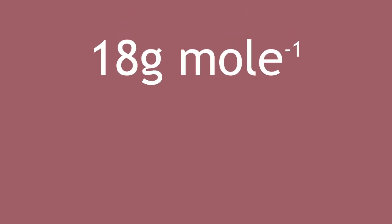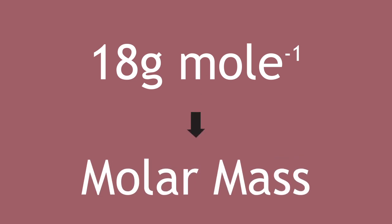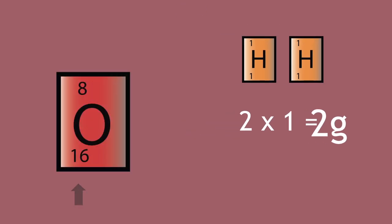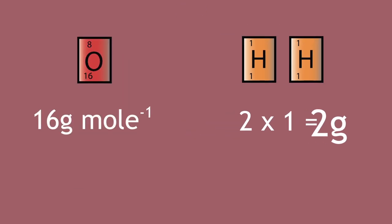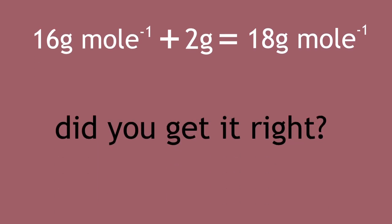The correct answer is 18g per mole, and this is also known as the molar mass. It's 18g per mole because there are two hydrogens, each with an atomic mass of one gram. So, 2 times 1 equals 2. You then add this to the atomic mass of oxygen, which is 16g per mole. So, 16 plus 2 equals 18g per mole. Did you get it right?